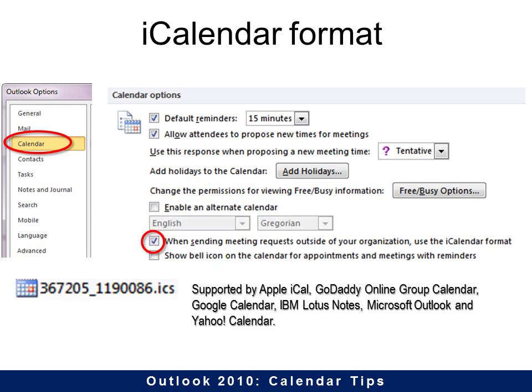You can also choose to send a meeting request to people outside your organization when using the iCalendar format. That means it will save it as an ICS file and they can open it up in any of these programs. It's very convenient — most people have at least one of those calendar programs.